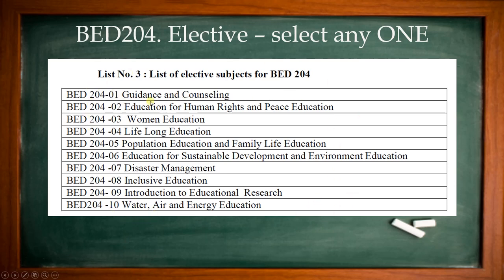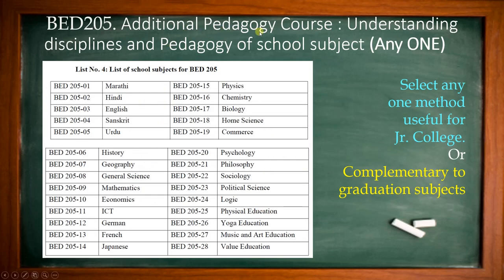BAD 205 is about selecting the third method. You had two methods in the first year; in the second year you will have only one method in addition to those selected for first year. There are 28 options given to you. You will have to select any one method that you have not selected for the first year. You cannot repeat the method.